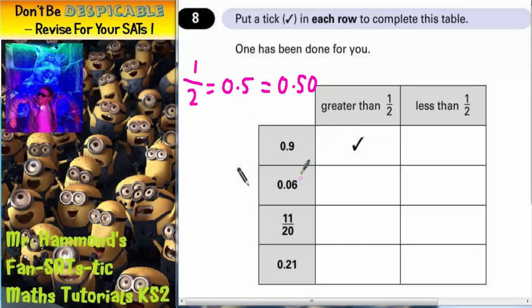0.06. Well 0.06, if I write it just under there like that, is clearly going to be less than 0.50. And remember 0.50 is the same as 0.5. So 0.06 is going to be less. So that one we need to tick less than a half.